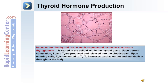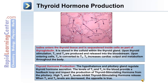Iodine is stored in the colloid within the thyroid gland, and upon thyroid stimulation, T3 and T4 are produced and released into the bloodstream. Once they enter cells, T4 is converted to T3, and T3 functions by increasing cardiac output and metabolism throughout the body. The hypothalamus and pituitary gland regulate thyroid hormone secretion. The levels of T3 and T4 in the blood provide a feedback loop — when T3 and T4 are high, this inhibits TSH release.